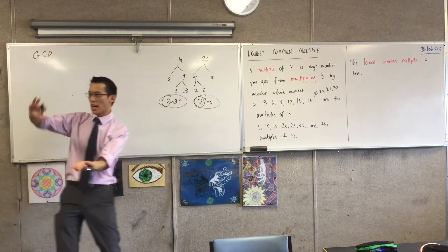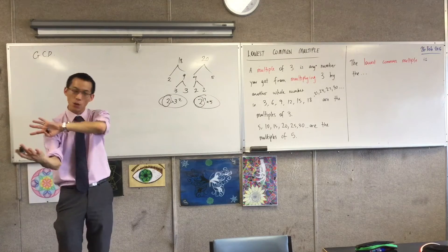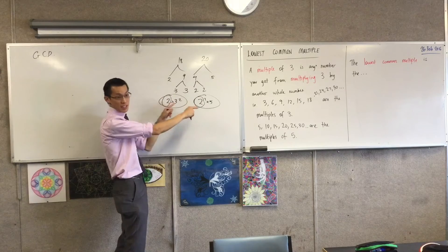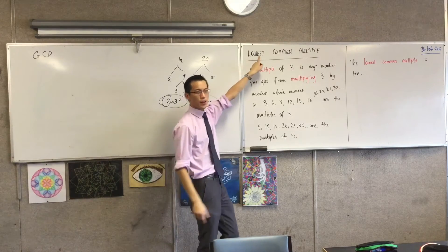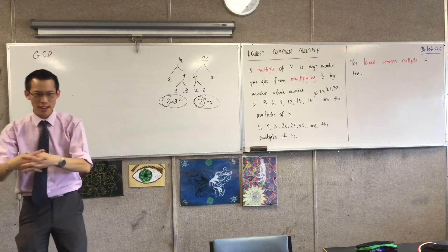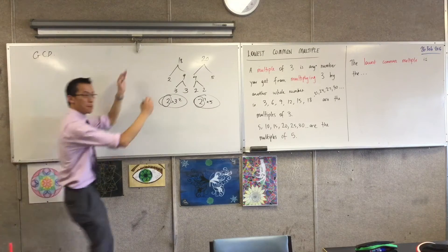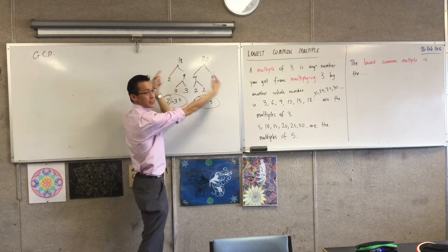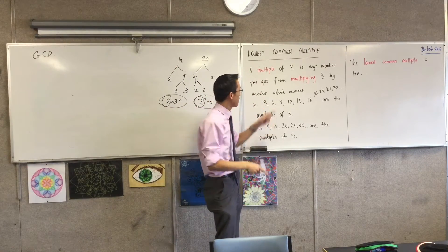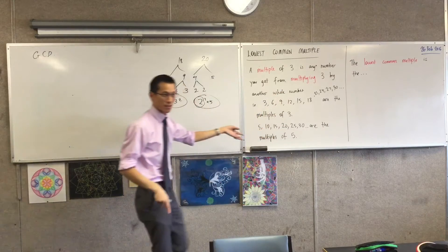Our lowest common multiple is kind of like the other side of the coin, right? Instead of looking at the biggest number that fits into both, it's looking for the smallest number that both numbers fit into. Okay? Can I say that again? This is the biggest number that fits into both. But this is the smallest number that both of them fit into. So, let me try to illustrate this, okay?